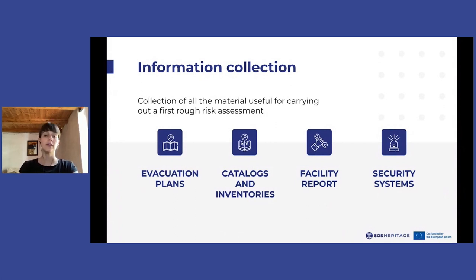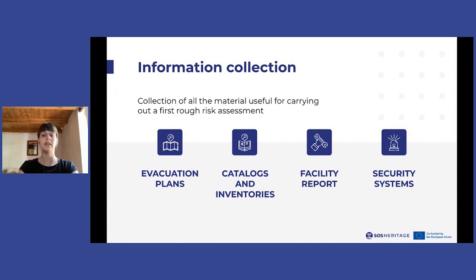Another important document is the detailed building plans — floor plans with the indication of the safety and security systems, such as the positioning of the fire and intrusion safety systems, and possibly the positioning of the water and air conditioning systems. An in-depth study of this information makes it possible to identify the weak points of the buildings already in this preliminary phase: areas more exposed to certain risks because they lack safety systems, or because they may be exposed to breakage and malfunction of electrical and water systems.